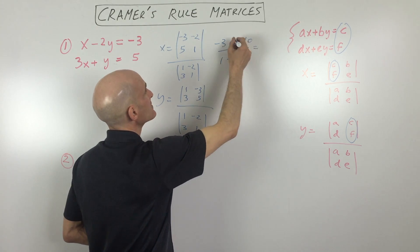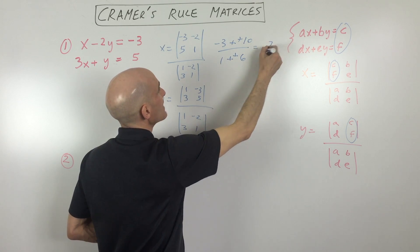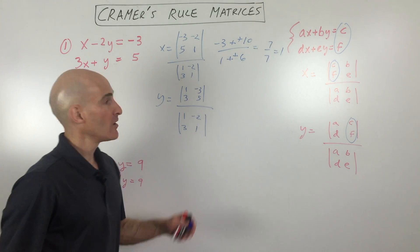So if we simplify this, this comes out to, let's see, this is seven. This is seven. So we get one.